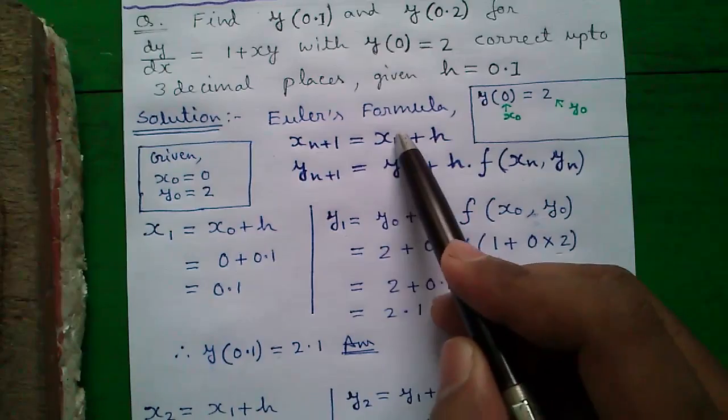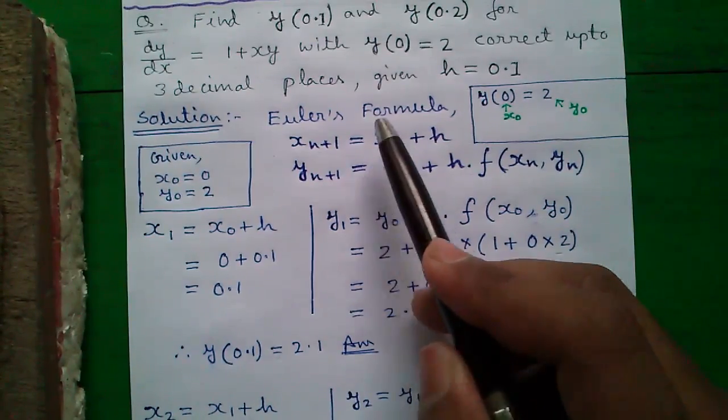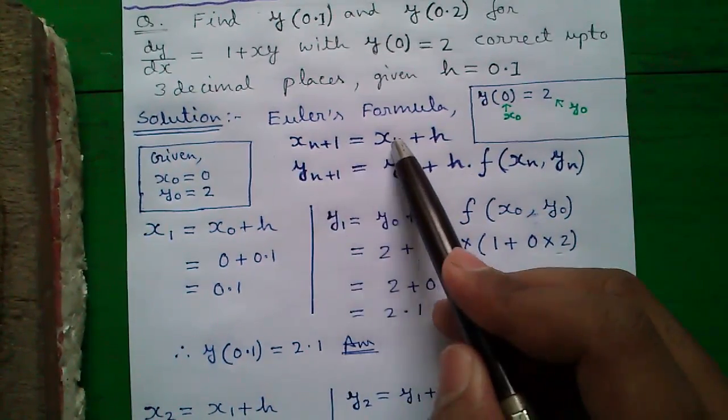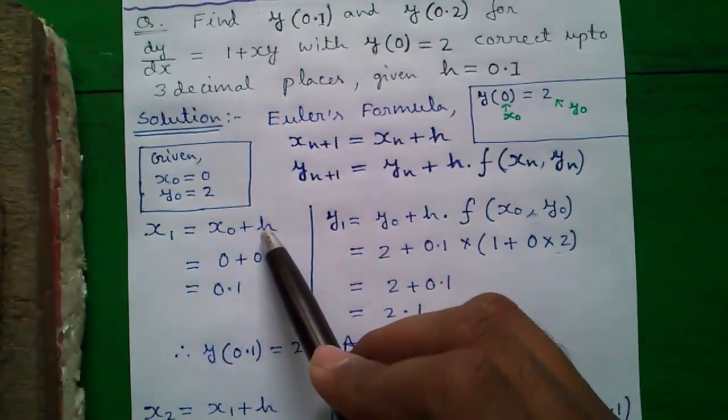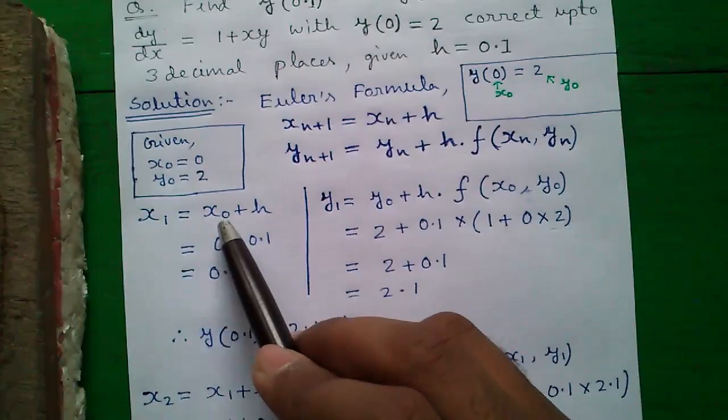Next if we know x_0 or x_n we can easily find out x_{n+1} that is 0 plus 1 or x_1. So x_1 becomes x_0 plus h. Very simple. So x_1 becomes 0.1.